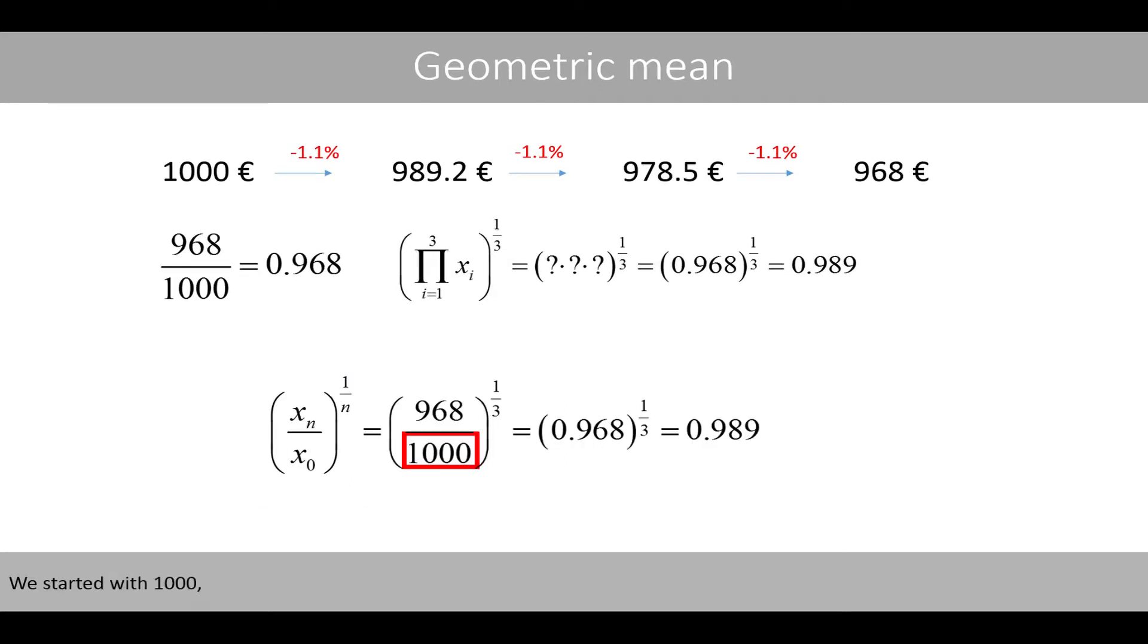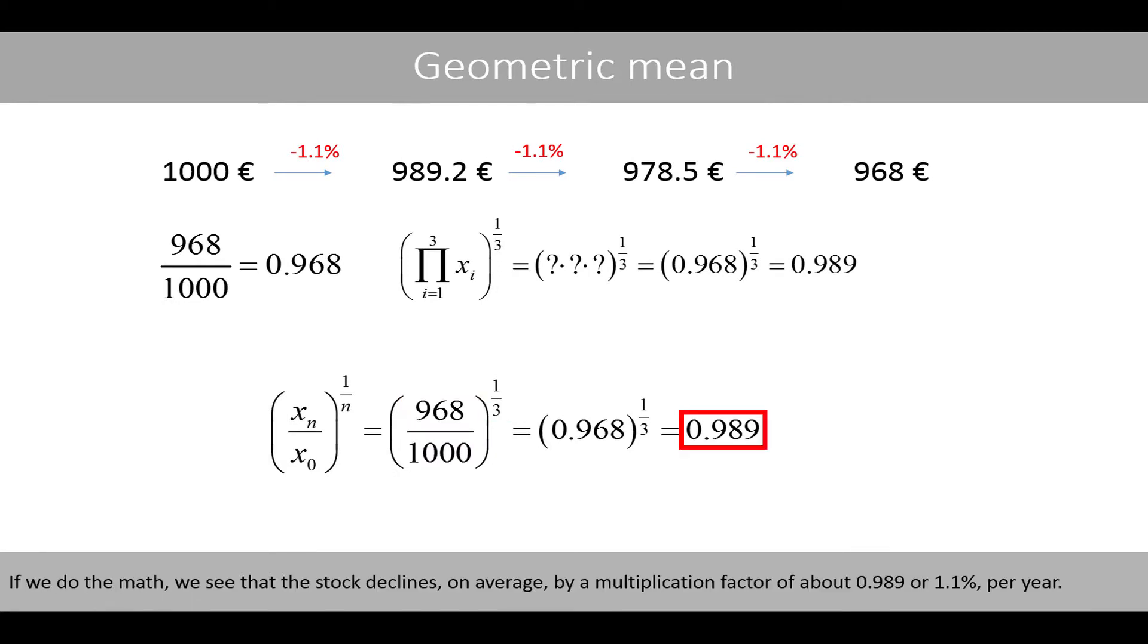We started with 1,000 and ended with 968 over 3 years. If we do the math, we see that the stock declines on average by a multiplication factor of about 0.989 or 1.1% per year.